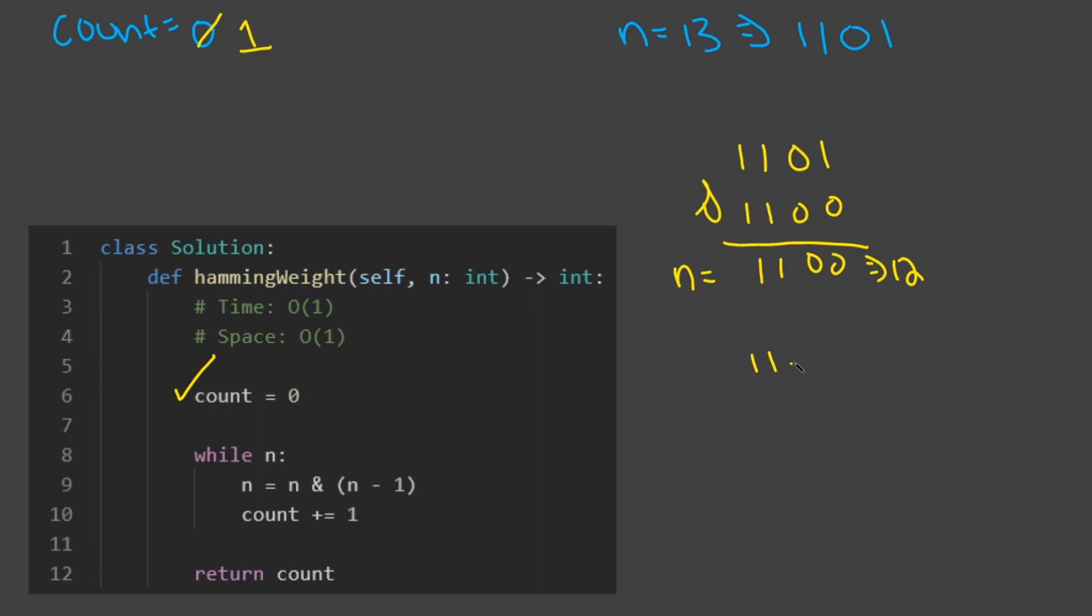So we would have 1, 1, 0, 0, ANDed with n minus 1. So 12 minus 1 is 11. So we would have 11, which is 1, 0, 1, 1. And if we AND these two, we see that we get 1, 0, 0, 0. So now we can increase our count again. So our count is going to be 2. And then we can do our last iteration.